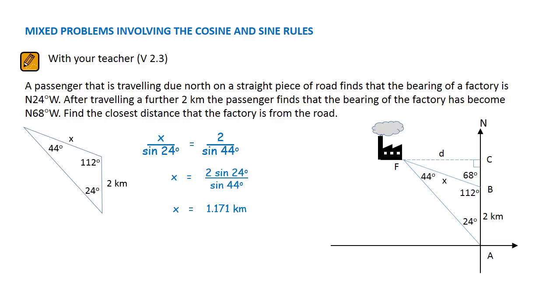Now we can look at the small triangle BCF and use right angle triangle trigonometry to find the distance D. We know the distance X equals 1.171 kilometers and this question involves opposite and hypotenuse. It is a simple sine question.